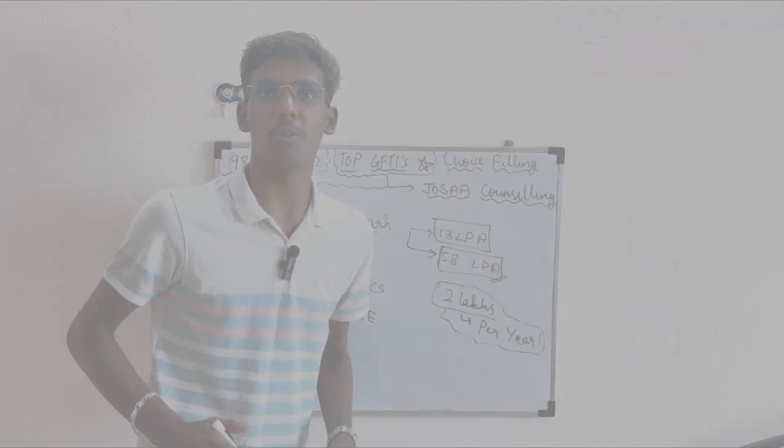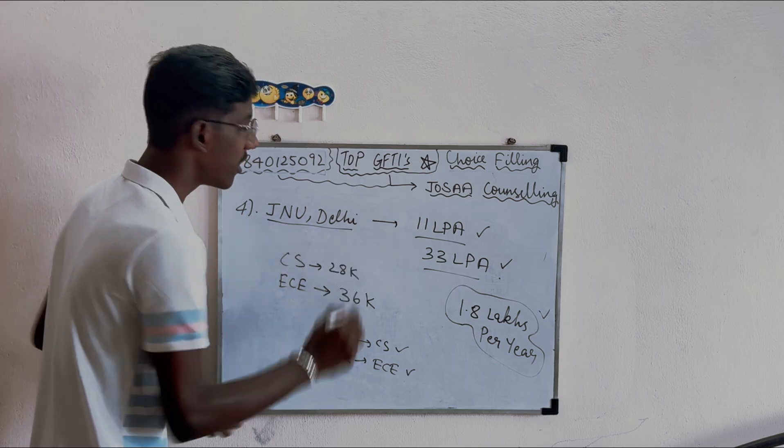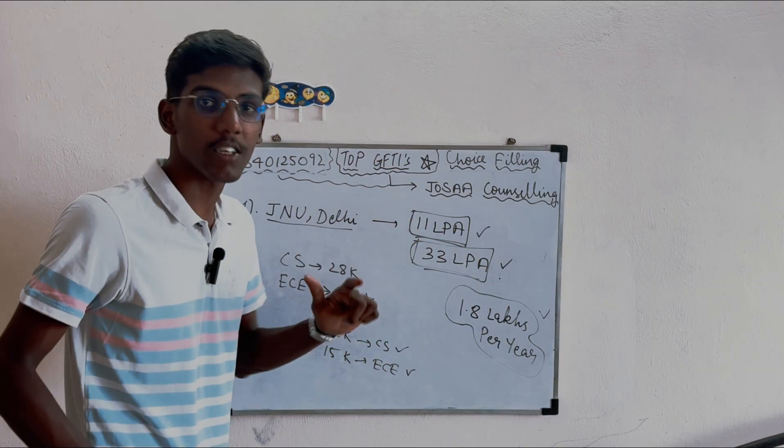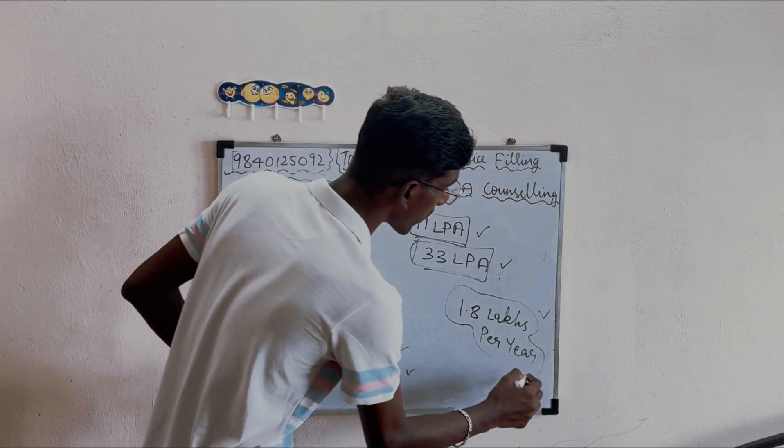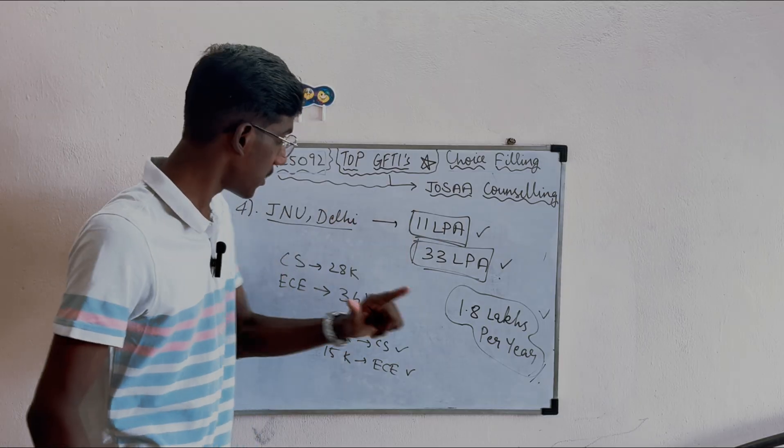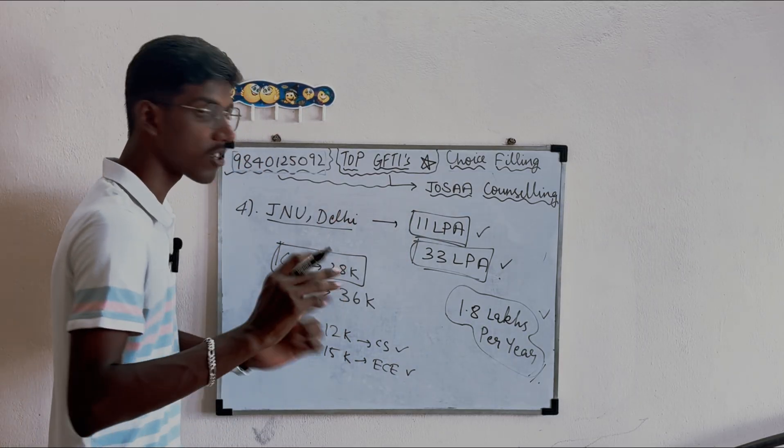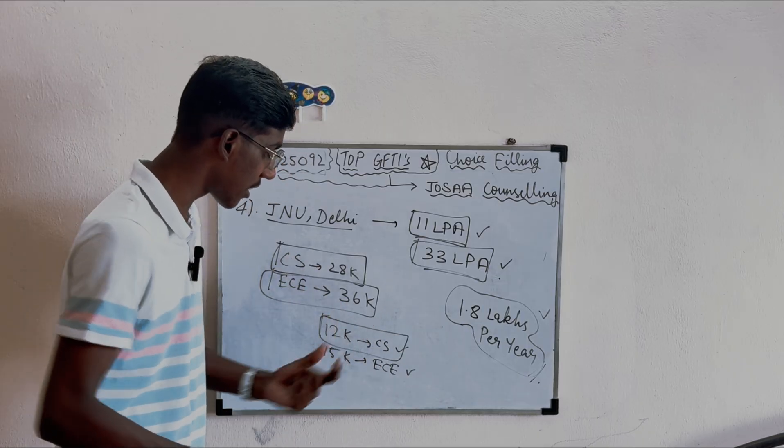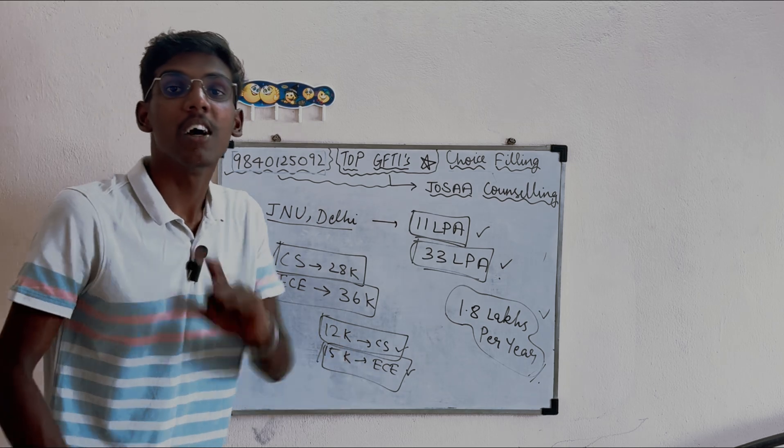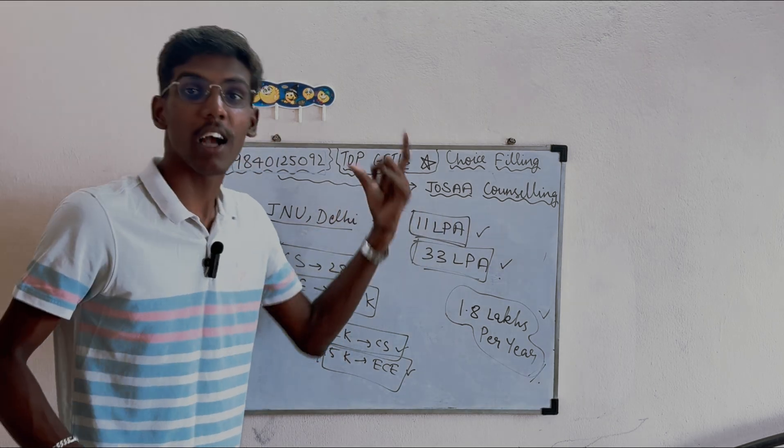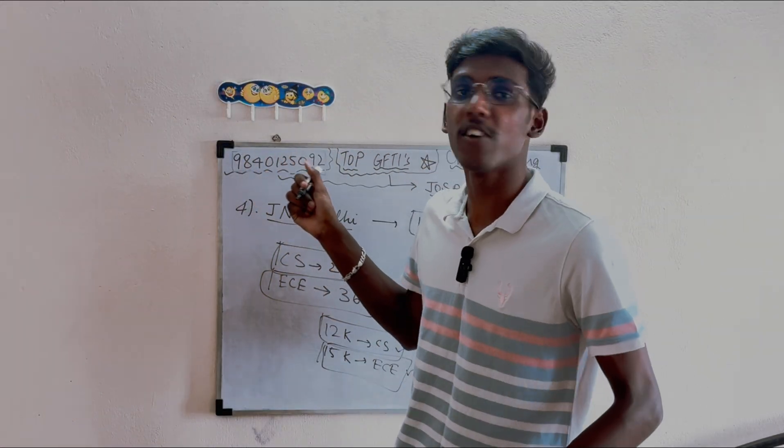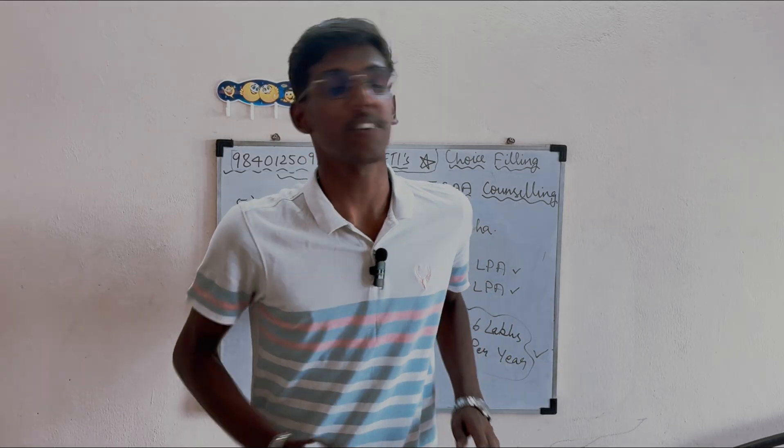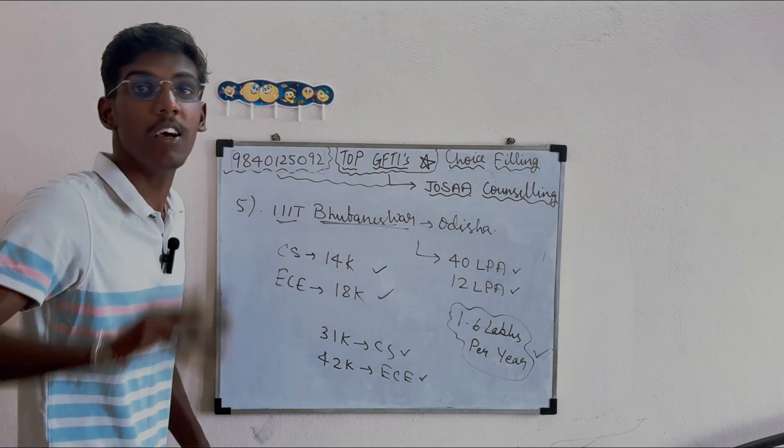Fourth best GFTI closing ranks: 12k CS, 15k for ECE. For JOSAA counseling guidance, contact 9401250092 on WhatsApp.